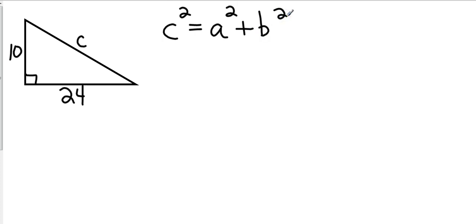Okay, so we don't know what C is, so that's just going to be C squared. Now, it doesn't matter which leg you put in first. You can have A equals 24, or you can have A equals 10. It doesn't make a difference. I'm just going to go in order from smallest to biggest. So I'm going to take the smallest side and square it. And then I'm going to take the largest side and square it.